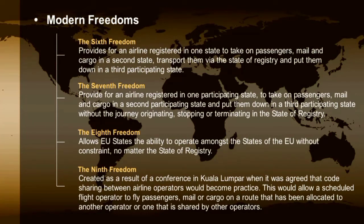This allows a scheduled flight operator to fly passengers, mail and cargo on a route that has been allocated to another operator or one that is shared by other operators. Unlike the first five freedoms, freedoms six to nine are informal in nature — that is, they are not the consequence of any formal international agreement.